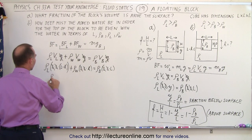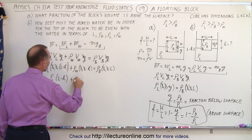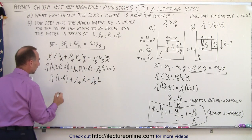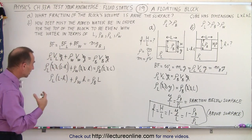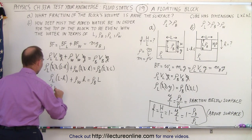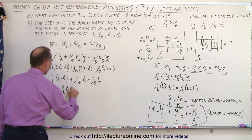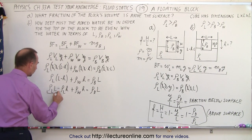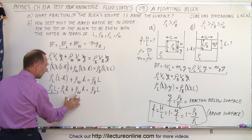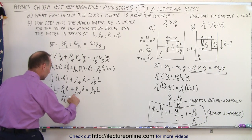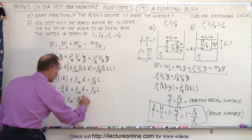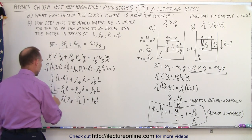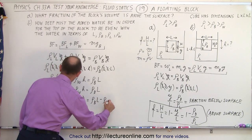After canceling, we have: density of liquid times (L minus h) plus density of water times h equals density of block times L. Expanding: density of liquid times L minus density of liquid times h, plus density of water times h, equals density of block times L. Moving the density of liquid times L to the right side and factoring out h on the left gives: h times (density of water minus density of liquid) equals density of block times L minus density of liquid times L.